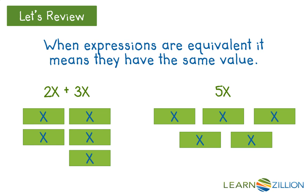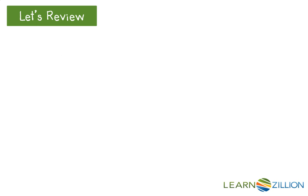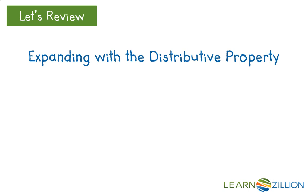When simplifying, all expressions that are written must be equivalent. One way to write equivalent expressions is to expand with the distributive property. When expanding, both terms inside of the parentheses are multiplied by the number on the outside.